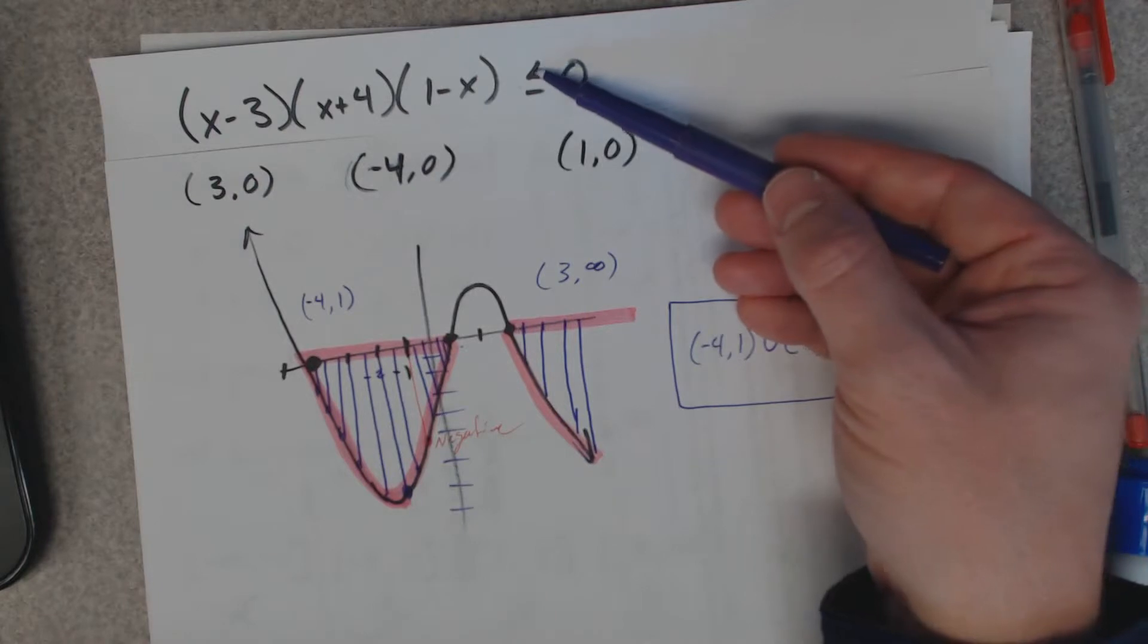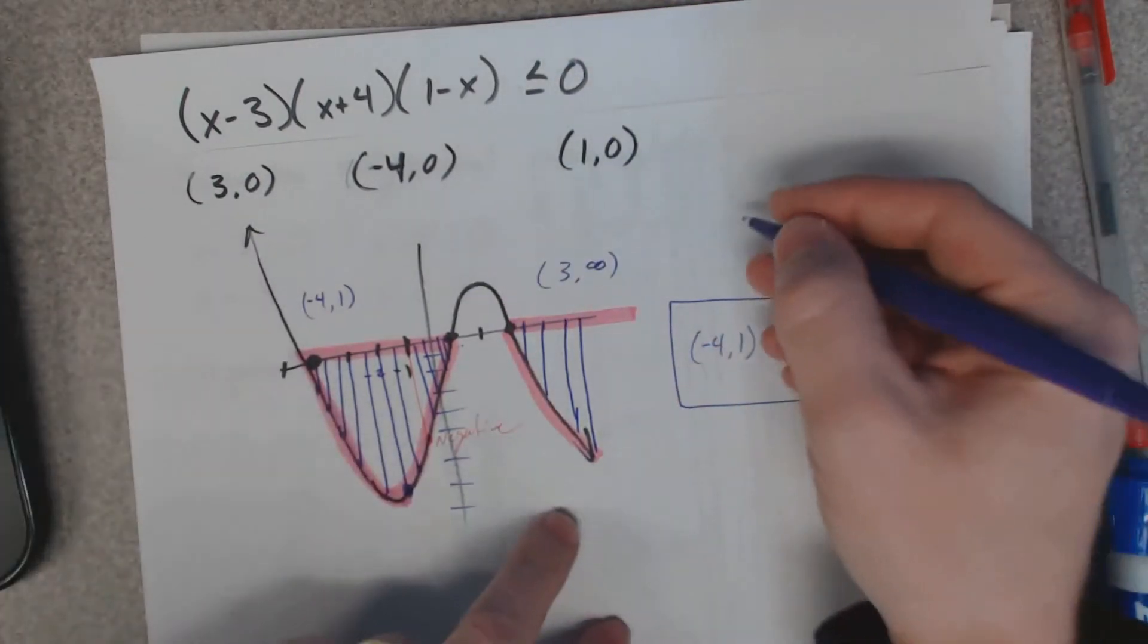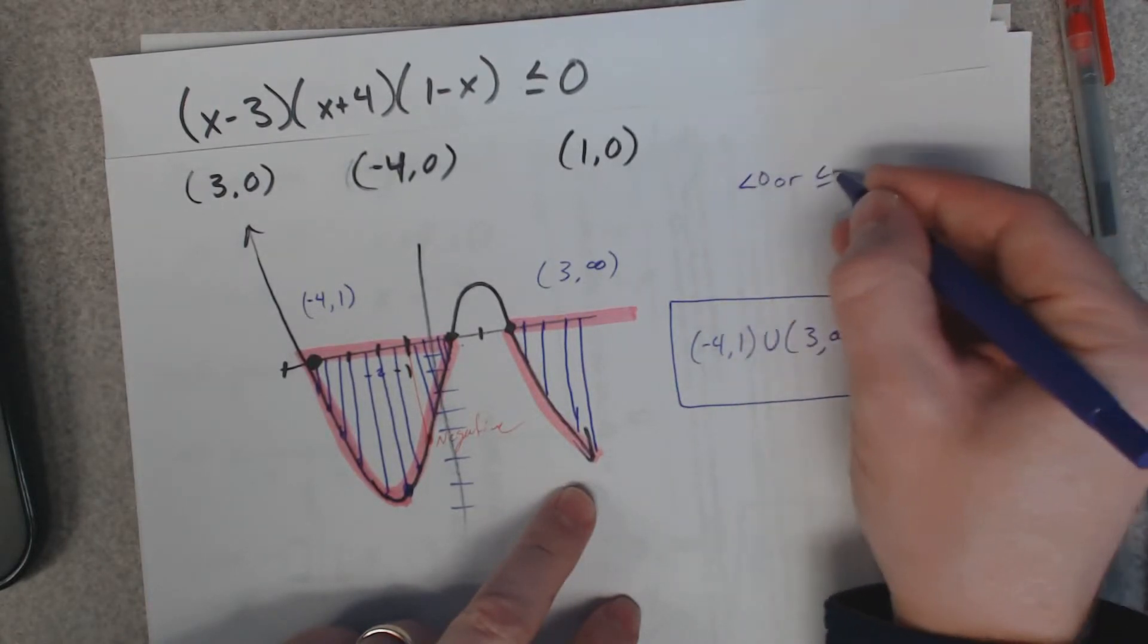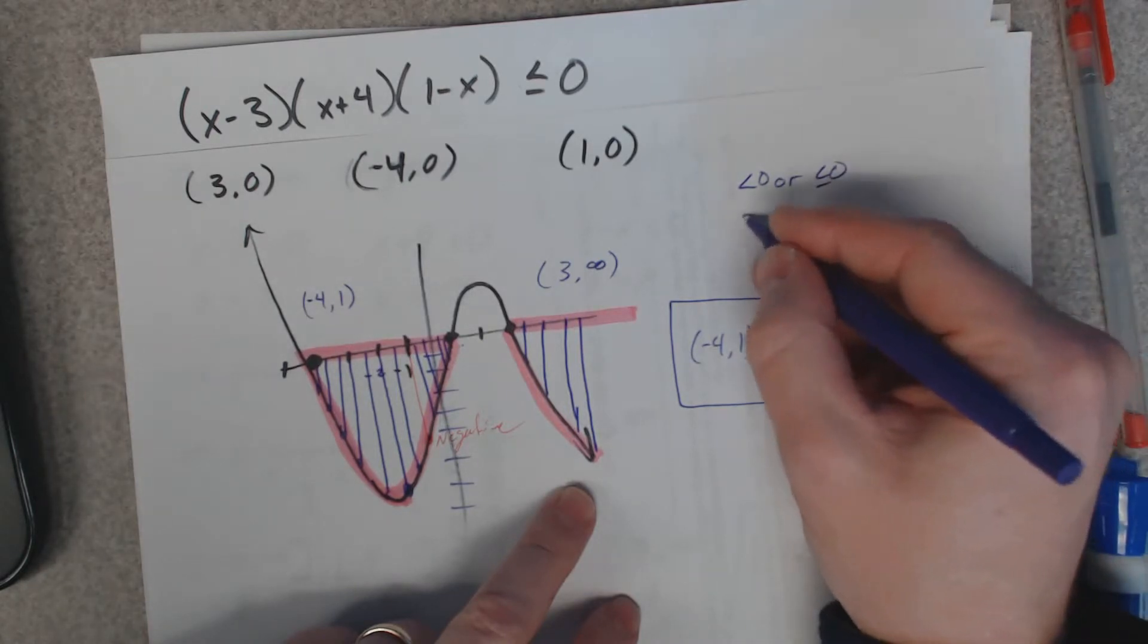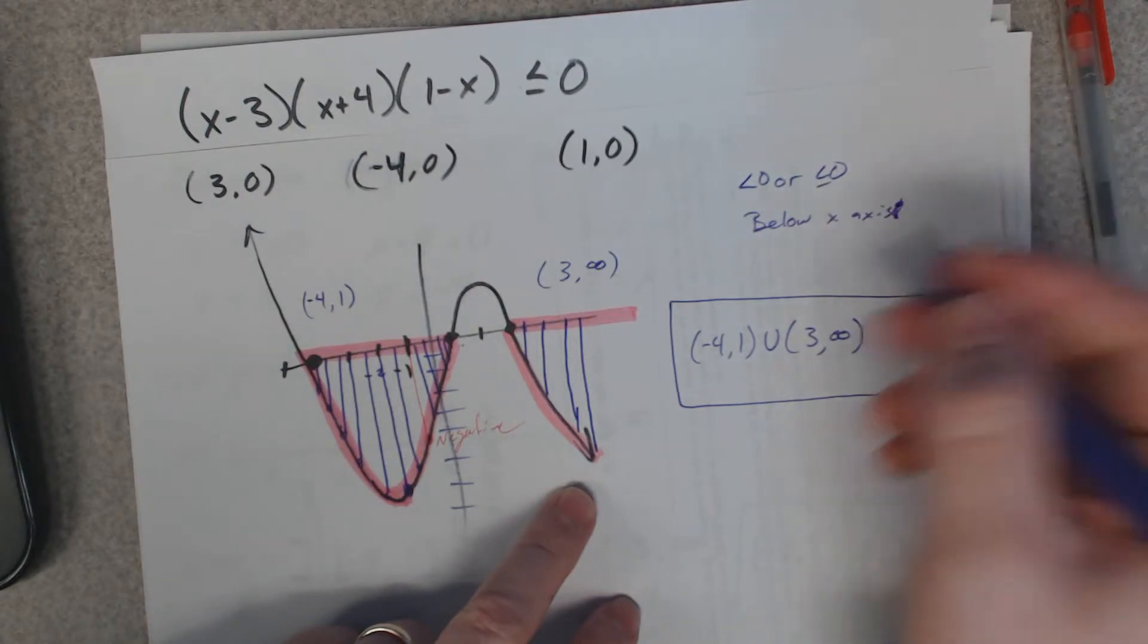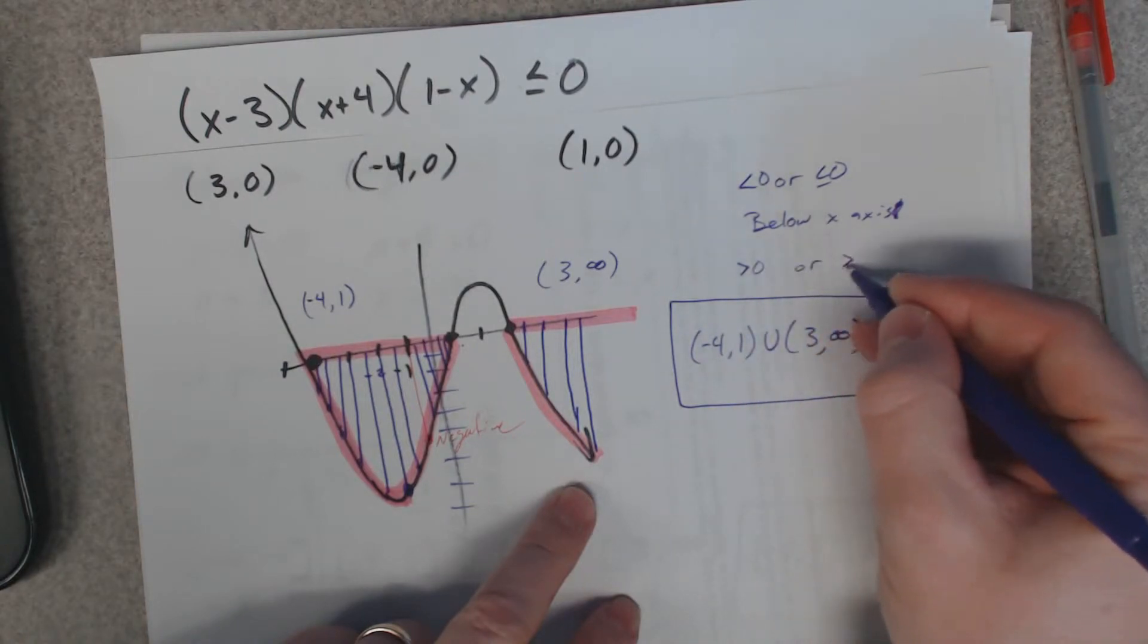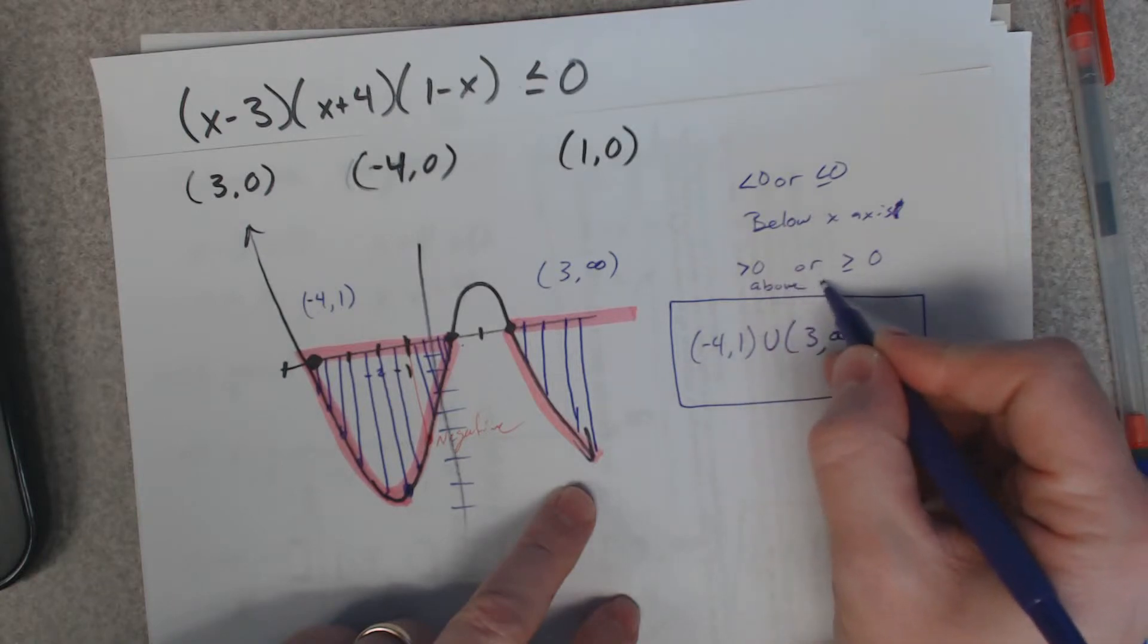If the inequality symbol had been flipped, you would look at what was above the x-axis. So let me write this out and see if I have this right. Less than zero or less than or equal to zero, I'm looking for below the x-axis. If I have greater than zero or greater than or equal to zero, we're looking for above, what part of the graph is above the x-axis.